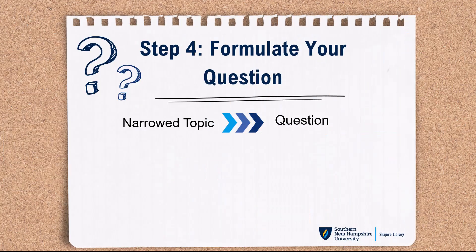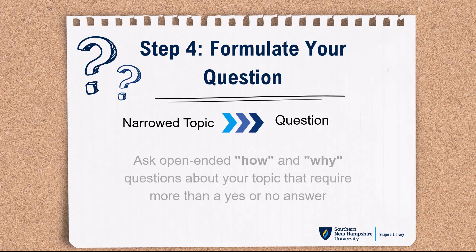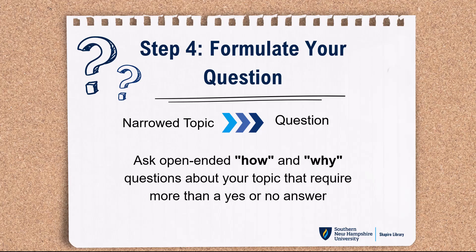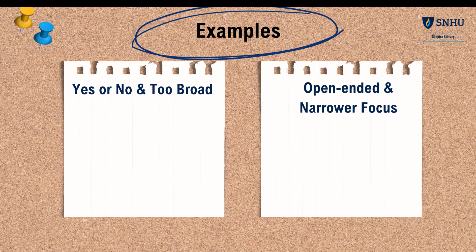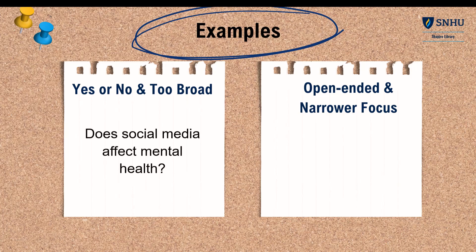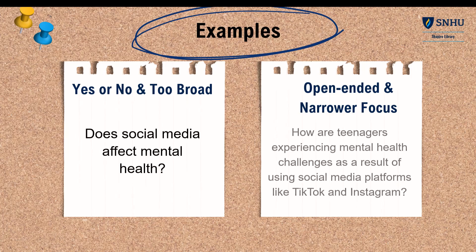Next, using what you've learned, create a question about your specific topic. Think of open-ended how and why questions that need more than just a simple yes or no answer. Try to be clear and specific in your question. For example, instead of asking, does social media affect your mental health? You could ask, how are teenagers experiencing mental health challenges as a result of using social media platforms like TikTok and Instagram?